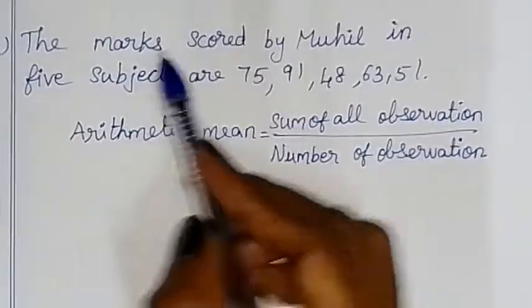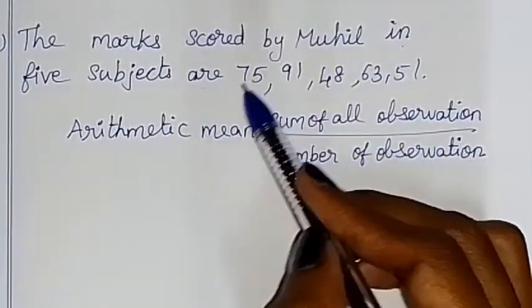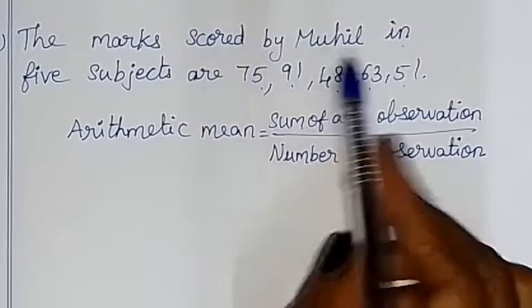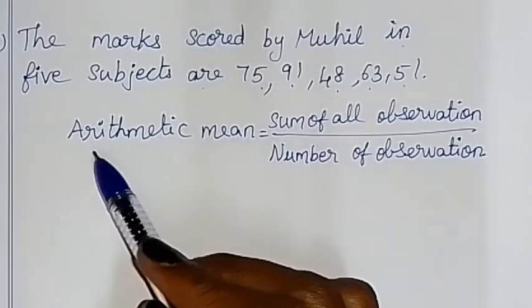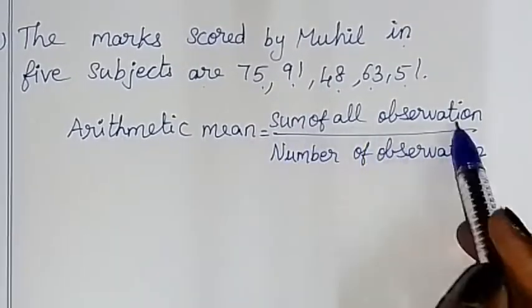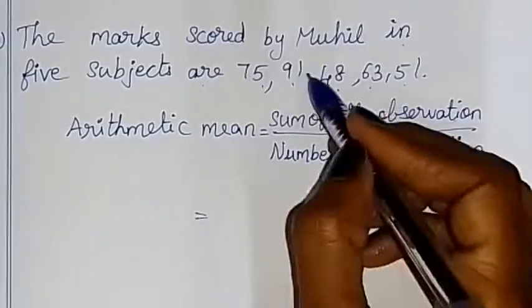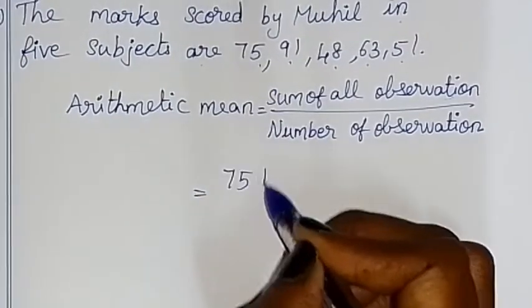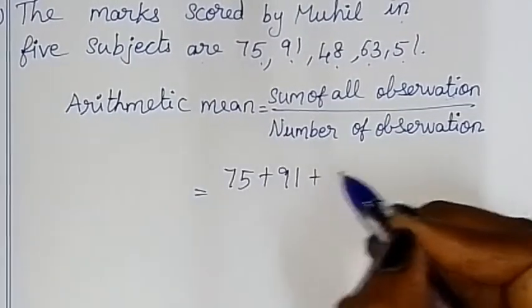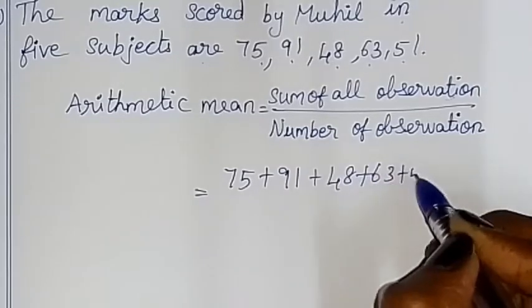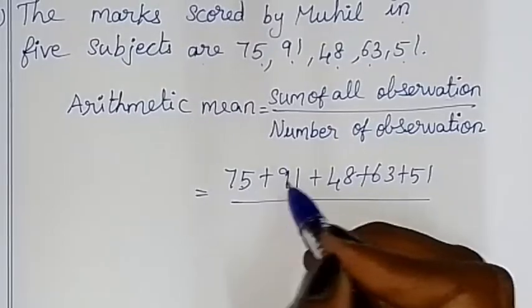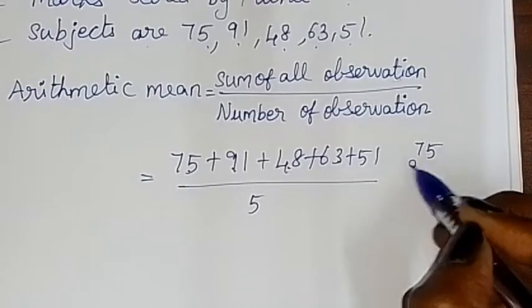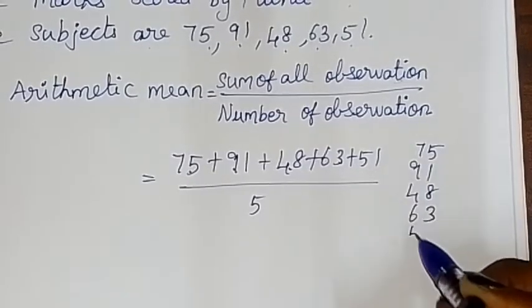The marks scored in 5 subjects are: 75, 91, 48, 63, and 51. So 5 subjects. We add 75 plus 91 plus 48 plus 63 plus 51, then divide by 5.